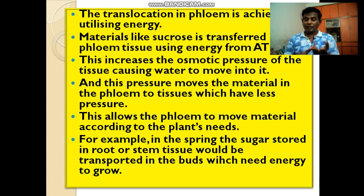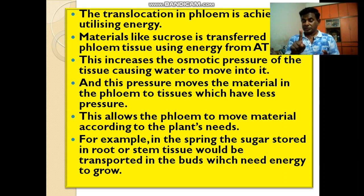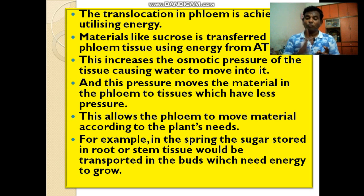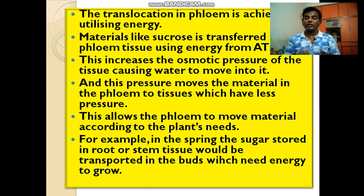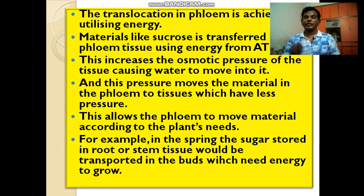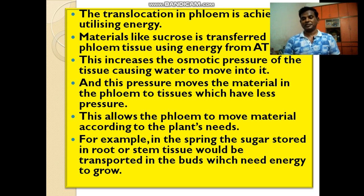For example, in the spring season, the sugar stored in the root or stem tissue will be transported to the buds which need energy to grow. And this way the translocation in plants and trees takes place.